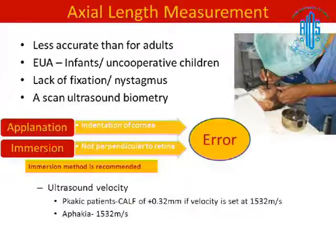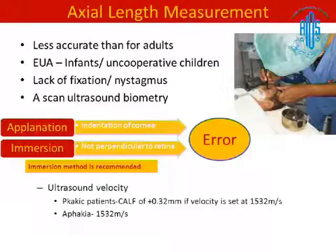Errors could occur because of the rapidly increasing axial length or because of the measurement technique. The eyes in children are much softer. For A-scan axial length measurement, applanation or immersion techniques are used. In applanation, there may be indentation of the cornea that can lead to error. In immersion, especially in younger children, infants, or uncooperative children under anesthesia, the focusing may not be proper, also leading to error. Immersion is the recommended method for axial length measurement in children.